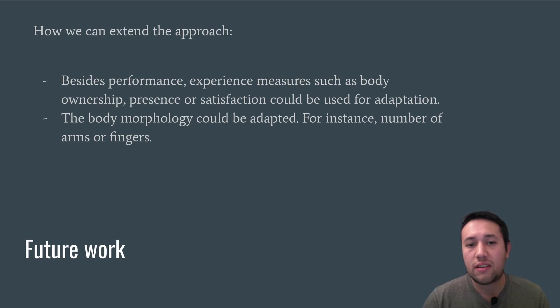In future work, we think that the approach could be extended to include other measures in the fitness function, such as ownership, presence, or other experience measures. And body morphology could also be a parameter for adaptation, such as the number of arms or fingers.